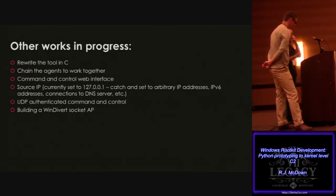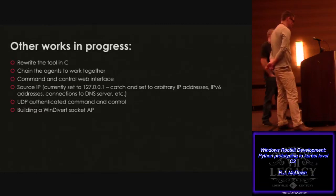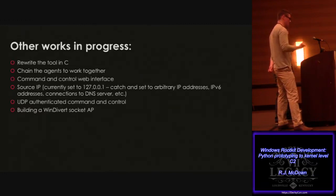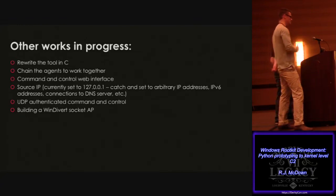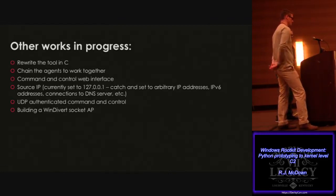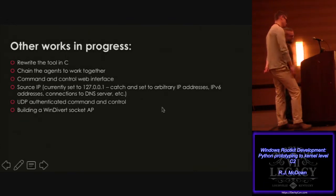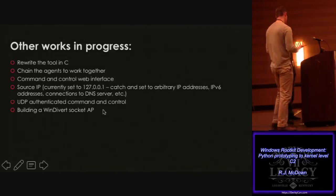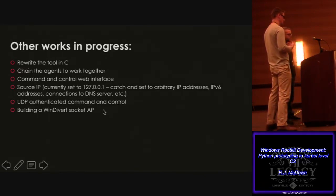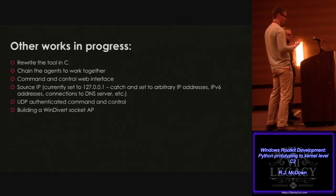The WinDivert API in C also supports asynchronous IO, which speeds things up considerably. One thing we've tossed around is when we set these network connections, setting them to arbitrary IP addresses or making them look like legitimate DNS traffic - like DNS traffic to a domain controller, which is often a DNS server - or setting to IPv6 addresses, because we know everyone understands IPv6 addressing. Trying to hide or blend in with the environment more. There's a lot of to-dos, but it works in its current state as a command and control at a kernel driver level.